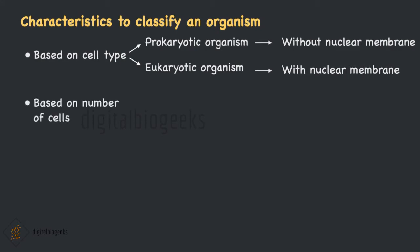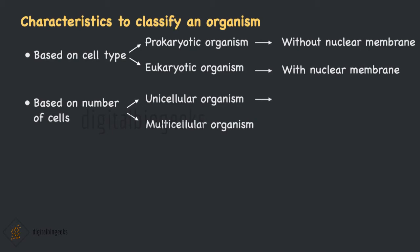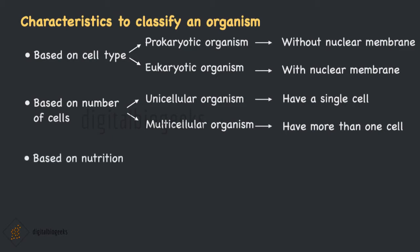The next classification is based on the number of cells. Based on number of cells, organisms can be classified into two: unicellular organisms and multicellular organisms. A unicellular organism has a single cell, whereas a multicellular organism has more than one cell. In multicellular organisms, labor is divided and cells are not identical as they perform different functions. Amoeba is a unicellular organism in which all functions are performed by a single cell.